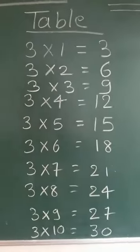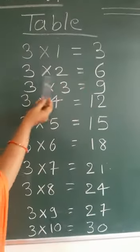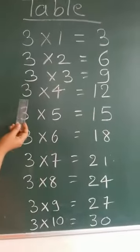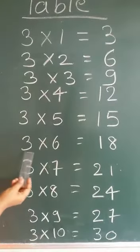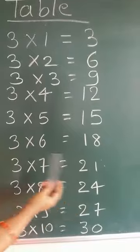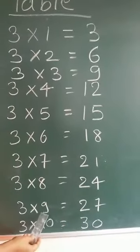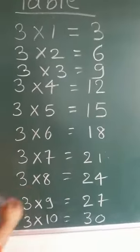Now, students, repeat once again. 3 1s are 3, 3 2s are 6, 3 3s are 9, 3 4s are 12, 3 5s are 15, 3 6s are 18, 3 7s are 21, 3 8s are 24, 3 9s are 27, 3 10s are 30.